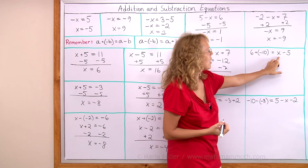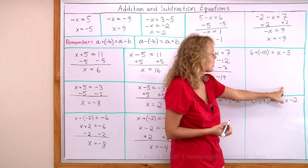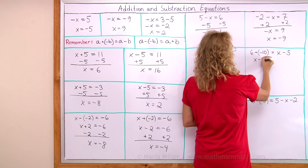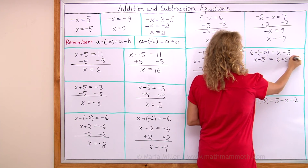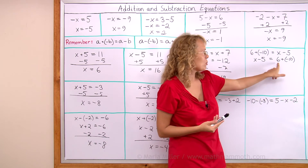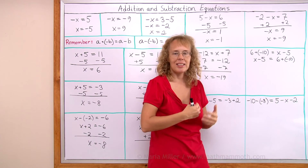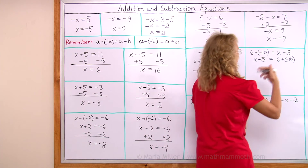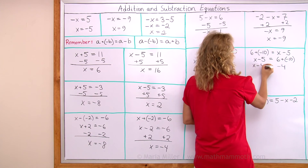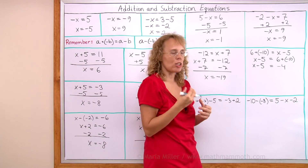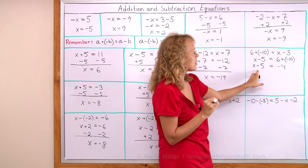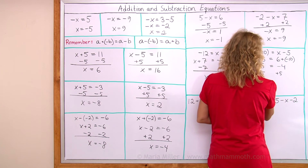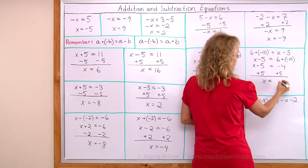The same is true for the next one. X is on the other side, so I can swap the sides. I need to do some calculating — simplify 6 plus negative 10, which is the same as 6 minus 10, which is negative 4. Now I solve it: there's a minus 5, so I add 5 to both sides, leaving x alone, and negative 4 plus 5 is 1.